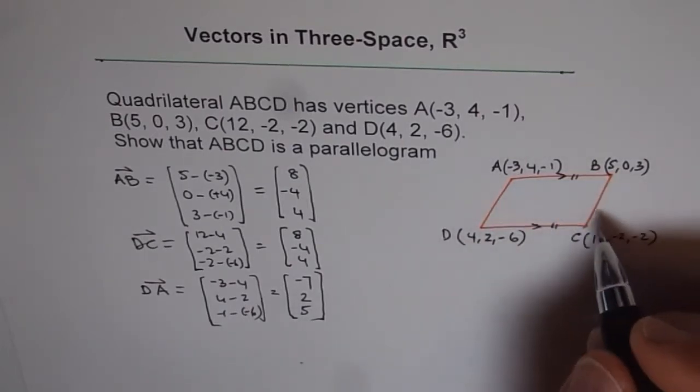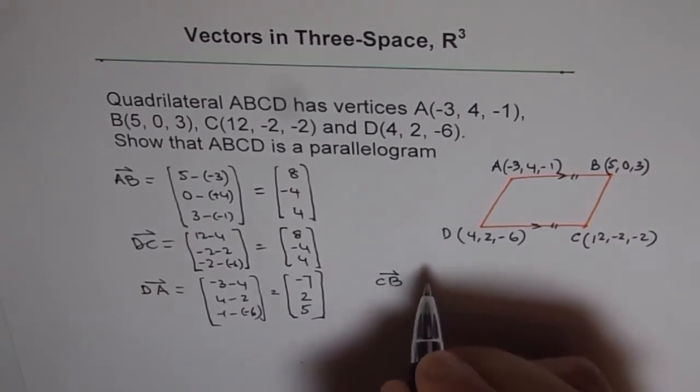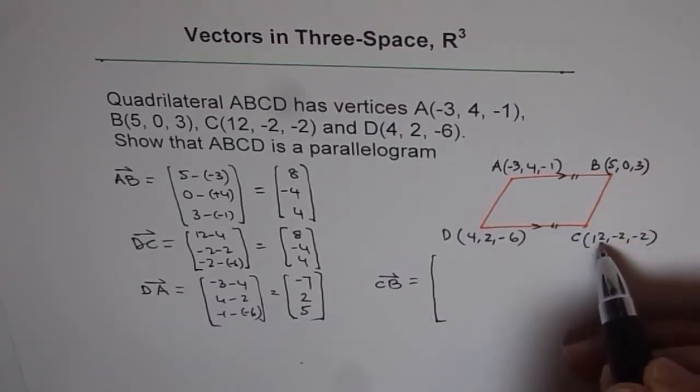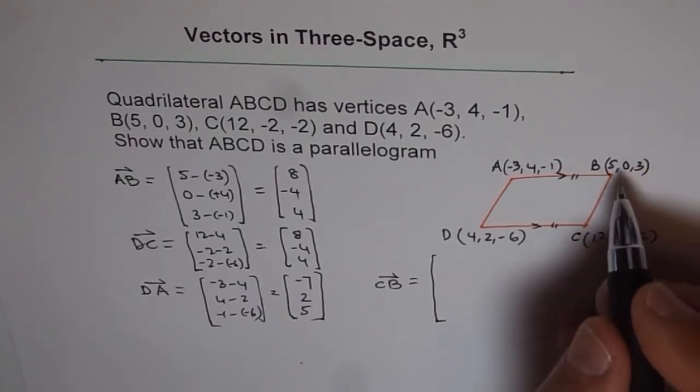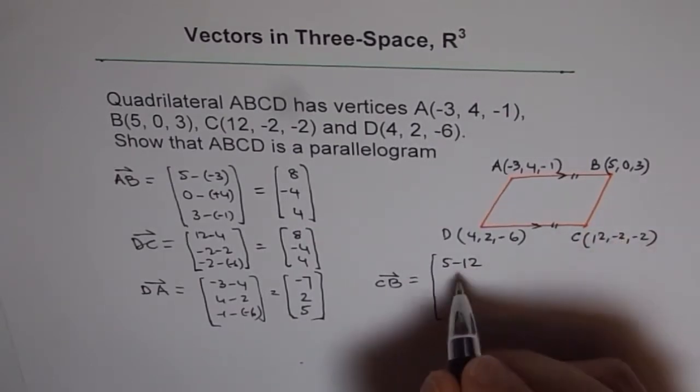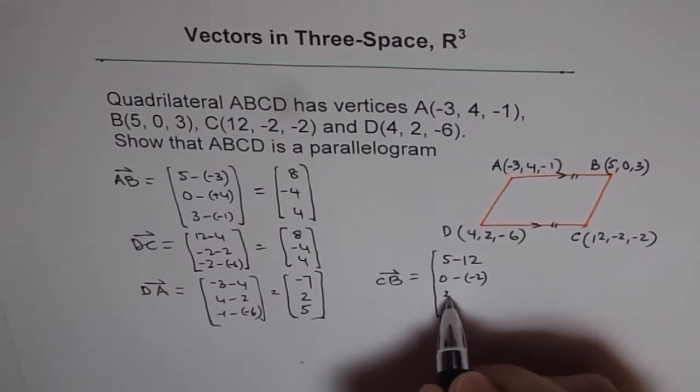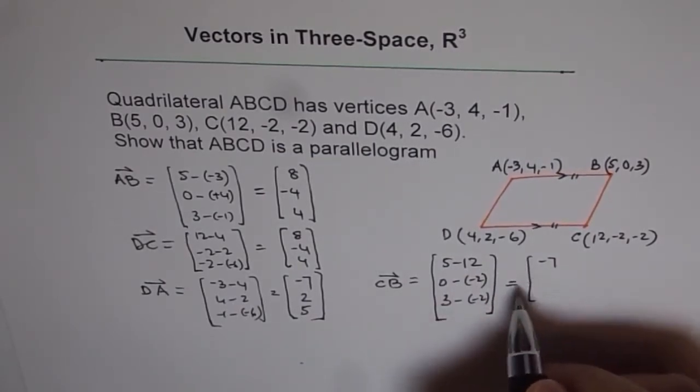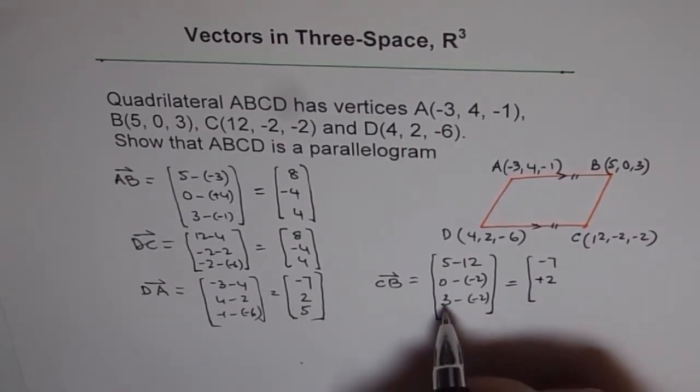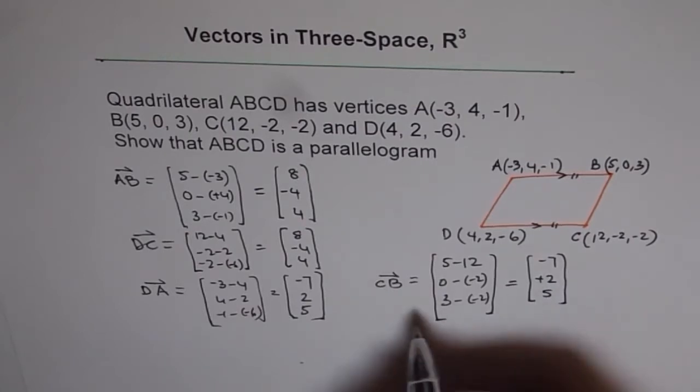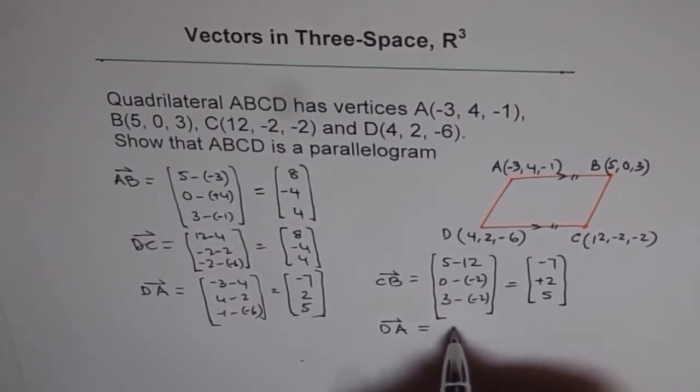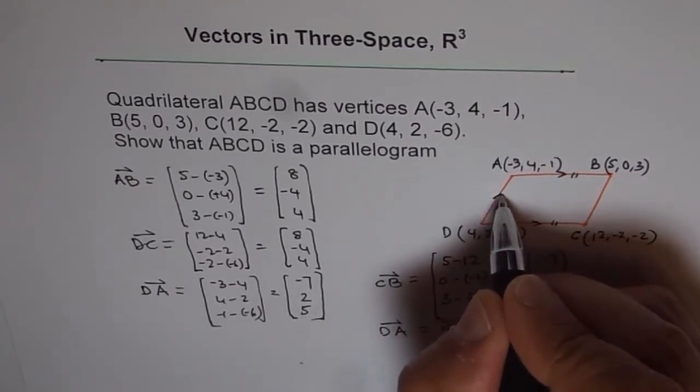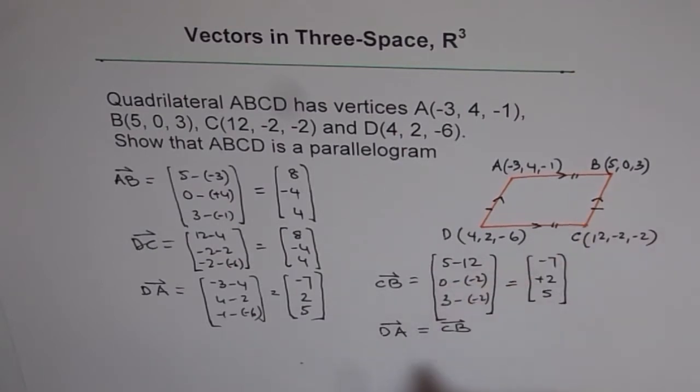D to A should be compared with C to B. What is C to B? C to B is equal to 5 minus 12, 0 minus (-2), 3 minus (-2). So 5 minus 12 is -7, 0 minus (-2) is 2, and 3 minus (-2) is 5. You can see that DA is equal to CB. Since these two vectors are equal, that means their direction is same, and their magnitude is also same.